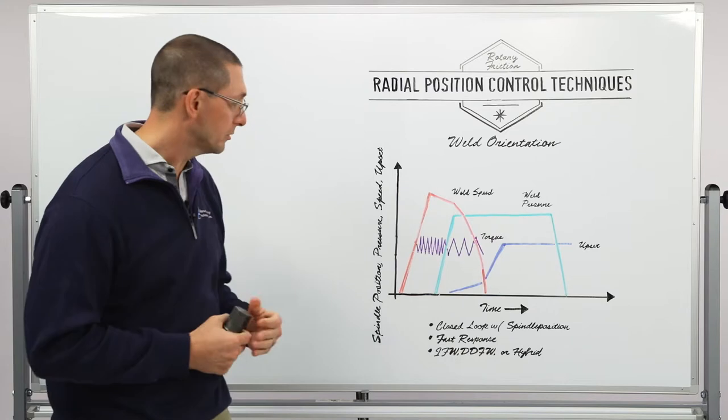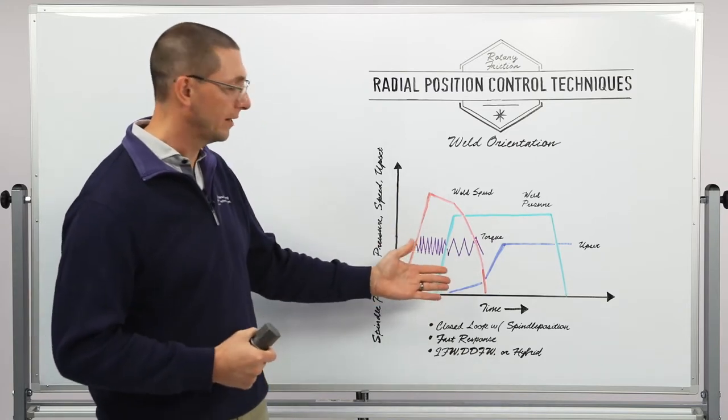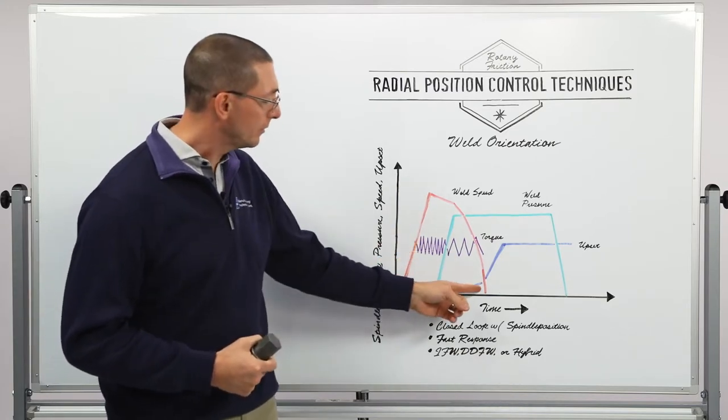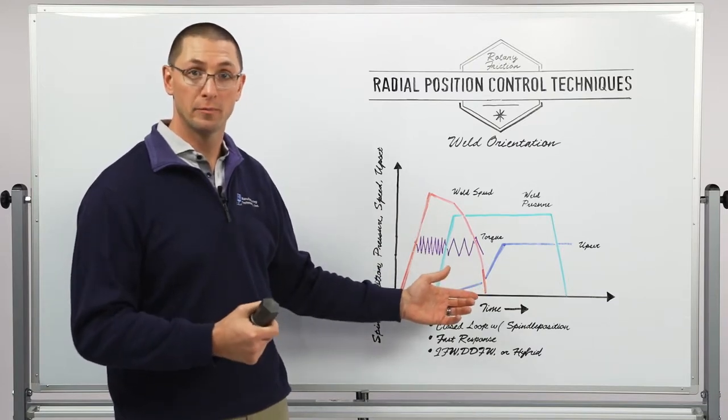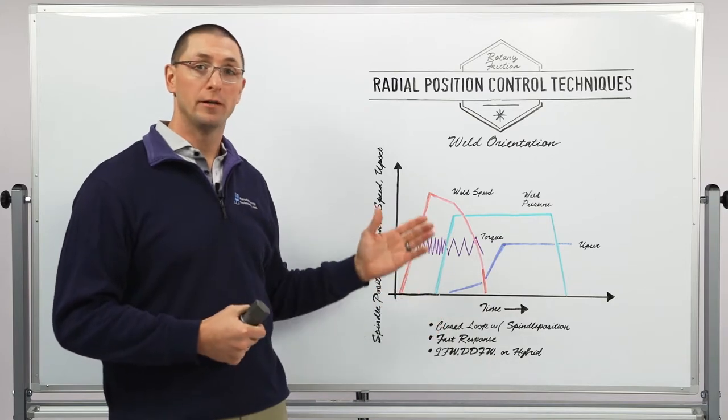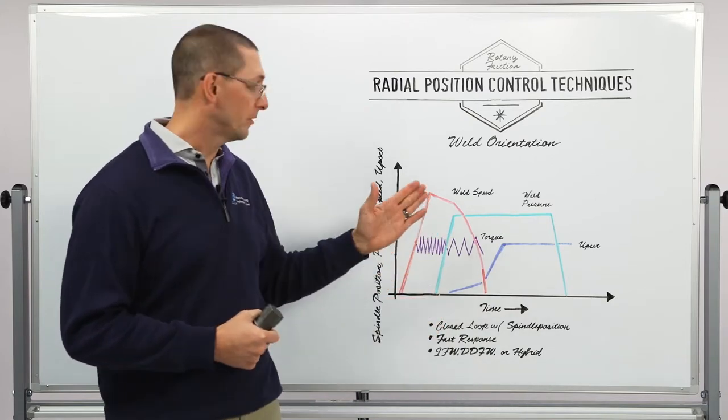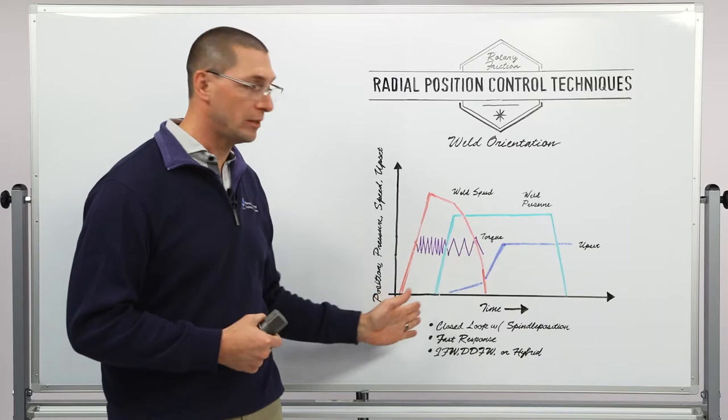So we accomplish this by running a standard weld. In this case we're looking at an inertia weld. So at the time that the weld seizes we need to understand what the position is of the spindle. We create a profile of spindle position from the start of the weld all the way through the end of the weld over time.